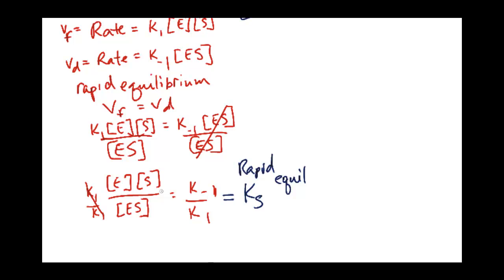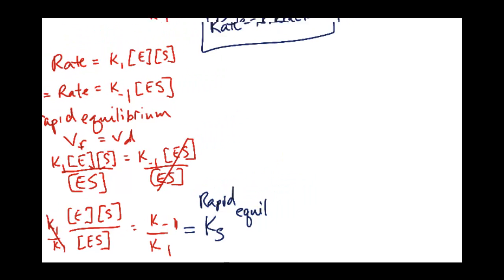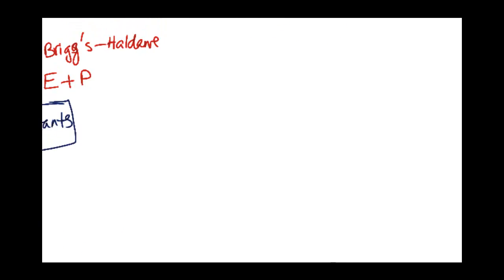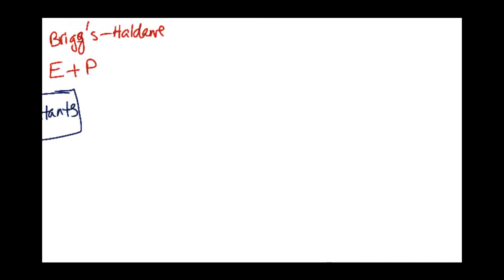Now, the problem with this is we're not looking at the entire picture. Briggs and Haldane came along and said let's incorporate all of it. Let's look at the enzyme and product included. So if we did that, our equations now become...